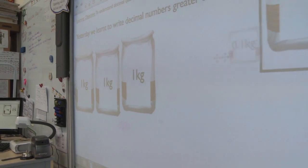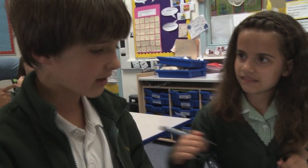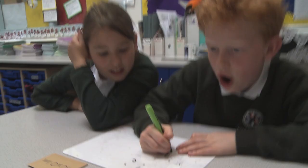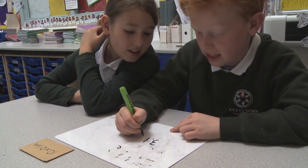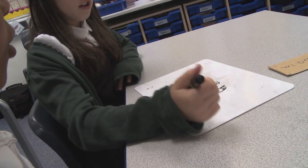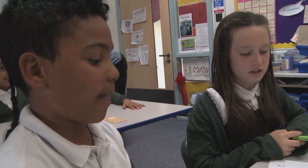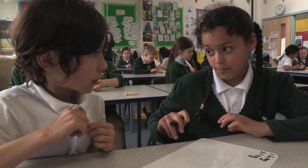Here is my next number. I think 3.1 kilograms because there's 1 tenth and 3 whole kilograms. So there's 3 wholes and then there's 1 tenth of a kilogram and that makes 3.1 kilograms. The 3 represents 3 kilograms and the 1 represents 1 tenth of a kilogram.